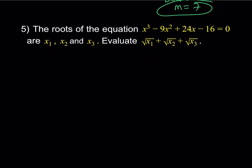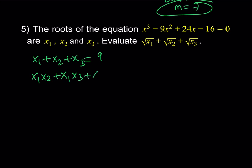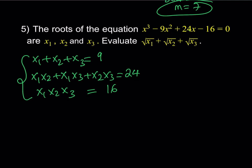Problem 5 involves the sum of the square roots of the roots of a cubic equation, which is fairly interesting. From the equation I can write: the sum x1 plus x2 plus x3 equals 9, the sum of two-way products x1x2 plus x1x3 plus x2x3 equals 24, and the product x1 x2 x3 equals 16. Since I just have radicals, I'll call the expression I'm looking for u — the sum of square root of x1 plus square root of x2 plus square root of x3.